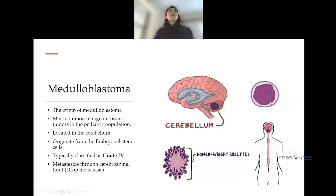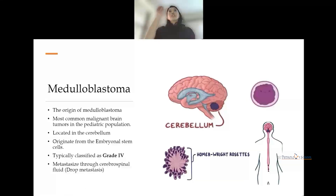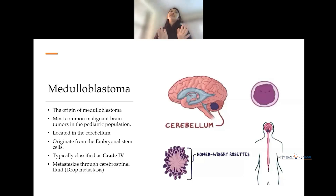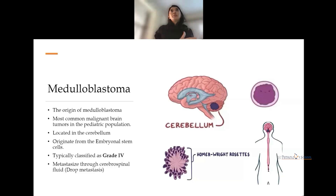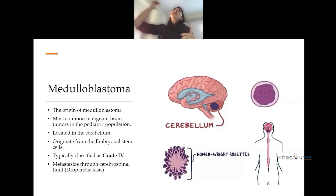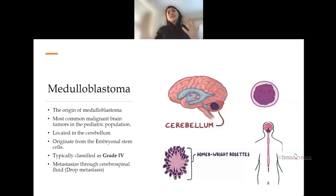The embryonal stem cell has a hypochromatic nuclei and very scant cytoplasm. The characteristic histologic feature seen in medulloblastoma is the Homer-Wright rosette — a small circular arrangement of tumor cells around the fibrillary neuropil without a lumen. These tumors tend to metastasize: as they are present in the vermis, they can infiltrate into the roof of the fourth ventricle and travel via the CSF, making drop metastasis common.